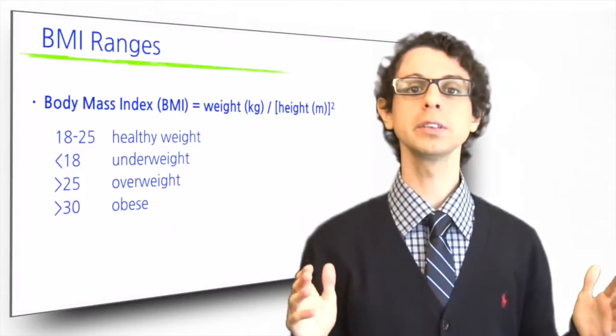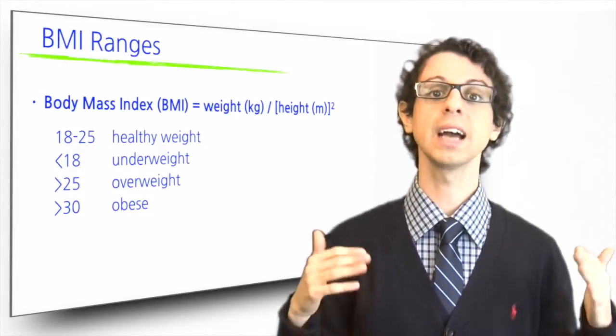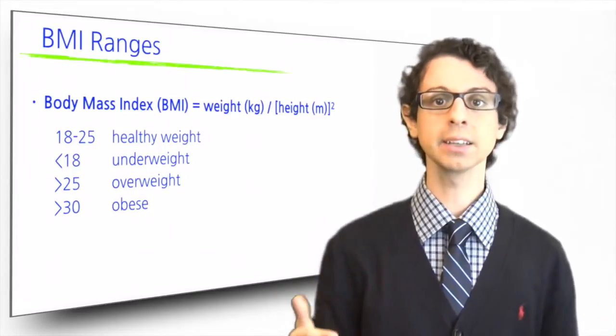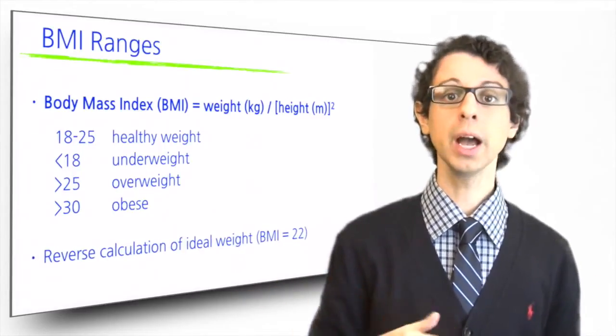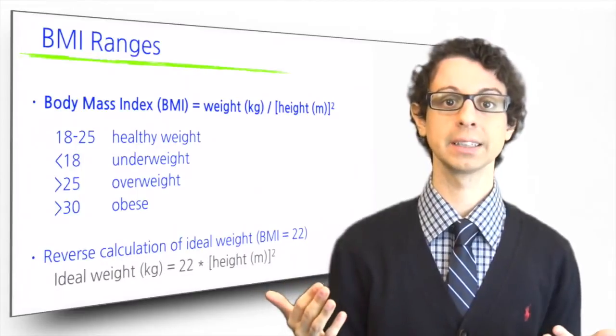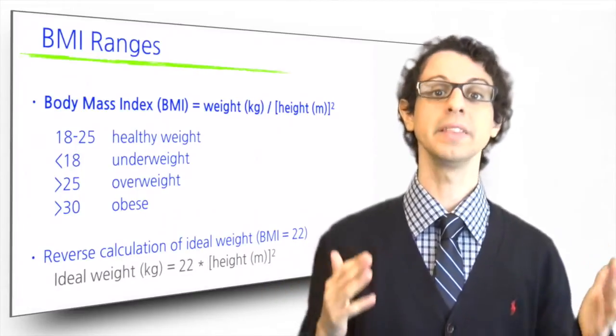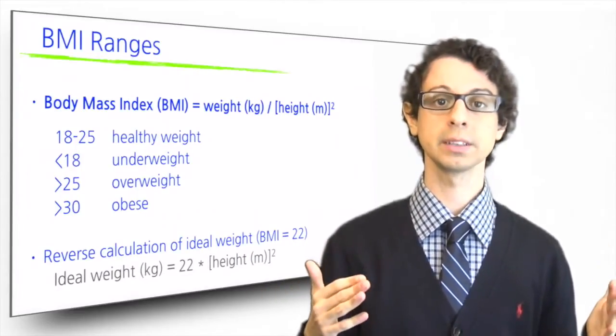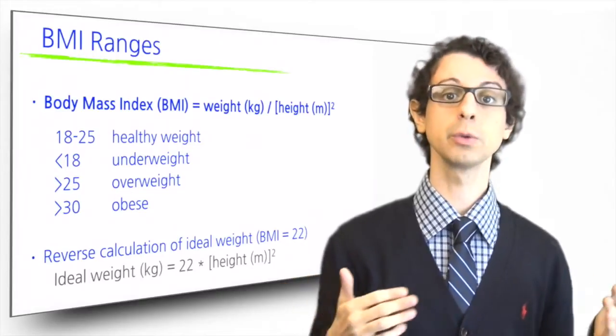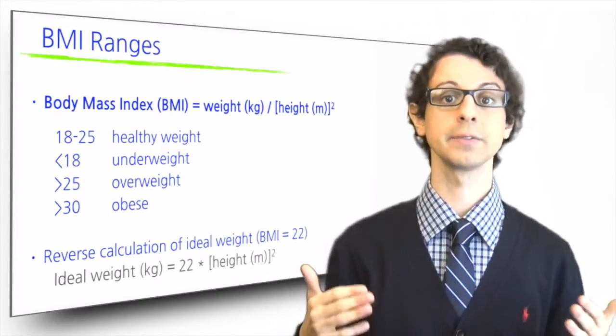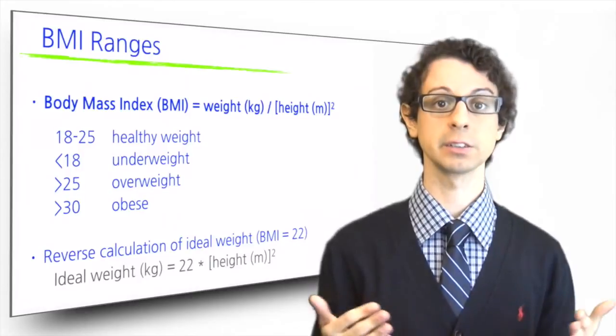If we want to use the BMI formula to predict the ideal weight for a given height, we can substitute the ideal BMI of 22 and multiply it by the person's height in meters squared. For example, the ideal weight of our 1.65 meters tall friend would be 22 times 1.65 times 1.65, which equals 60 kilograms.